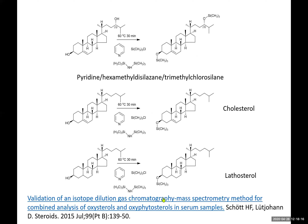The derivatization reaction is performed in pyridine/hexamethyldisilazane/trimethylchlorosilane to introduce TMS ethers, which increases stability and volatility for GC-MS. This method also works for cholesterol and cholesterol precursors. This classical method has been updated — I recommend the paper by Schott and Lövgren for an updated version.